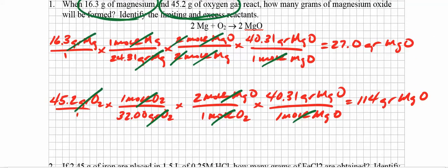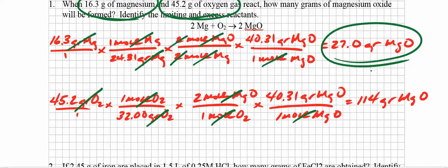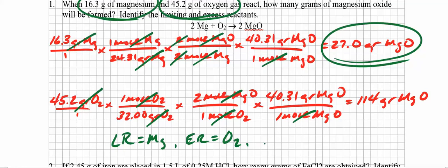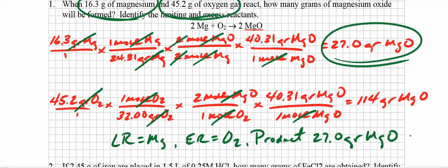Now I can do the comparison. 27 is obviously smaller than 114, so that is the amount of product I'm going to form. What reactant formed that product? Going back — it was magnesium. So the limiting reactant is magnesium. The other one must be the excess reactant, so I'll abbreviate that ER — the excess reactant is oxygen gas. The amount of product is the lesser of the two: 27.0 grams of magnesium oxide. And I'm done with number one.